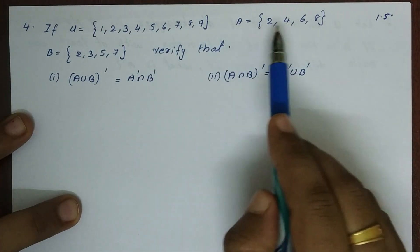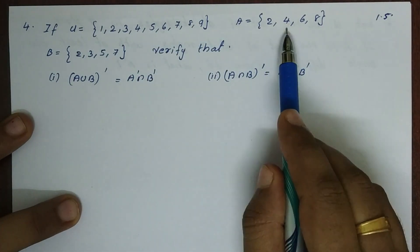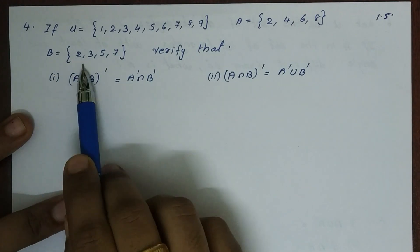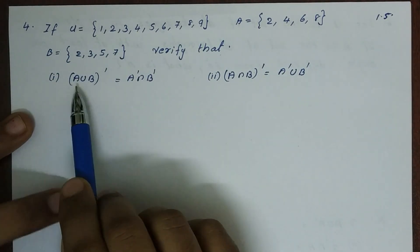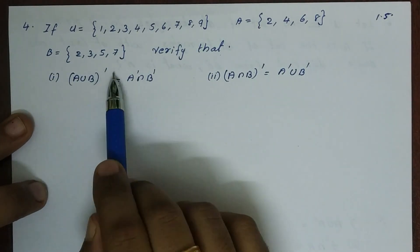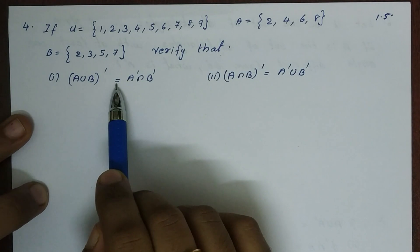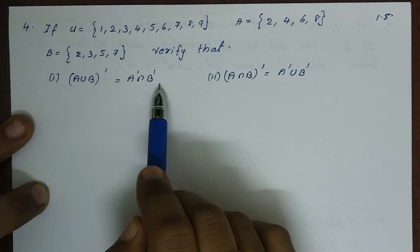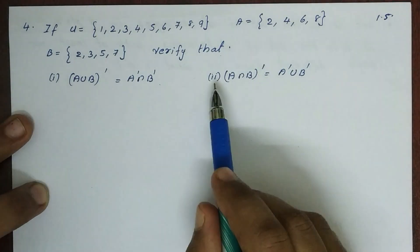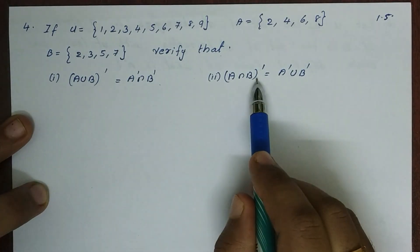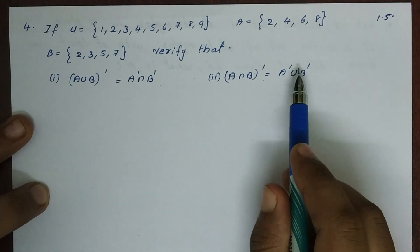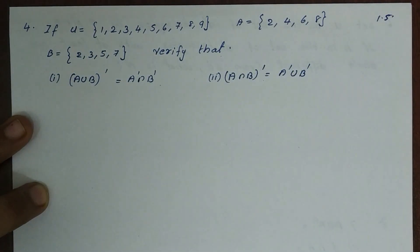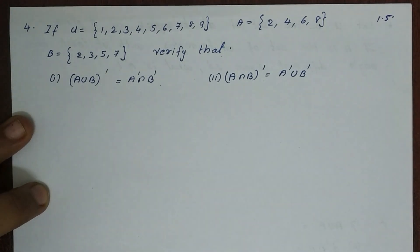then A is equal to 2, 4, 6, 8, and B is equal to 2, 3, 5, 7. Verify that A union B complement is equal to A complement intersection B complement. Second question: verify A intersection B complement is equal to A complement union B complement. This is De Morgan's law.